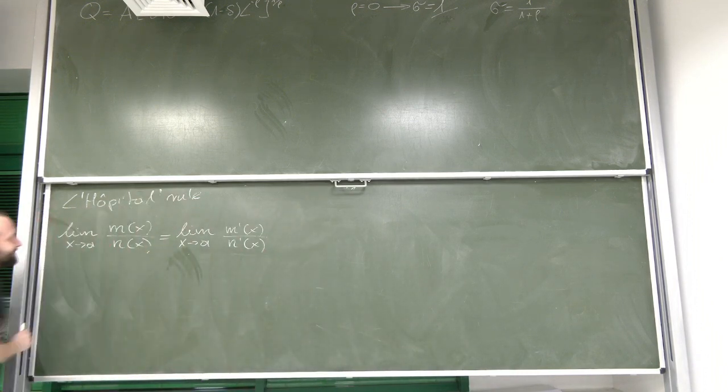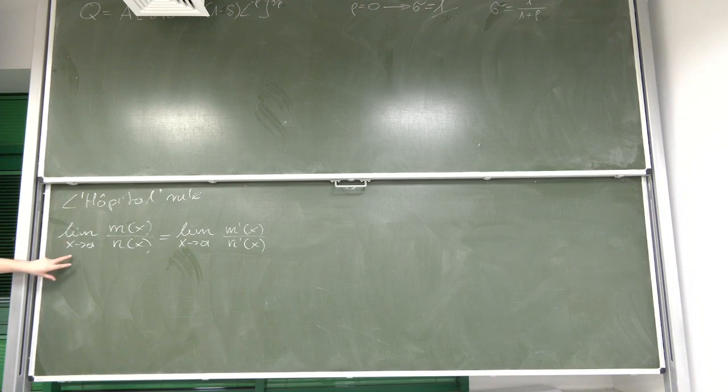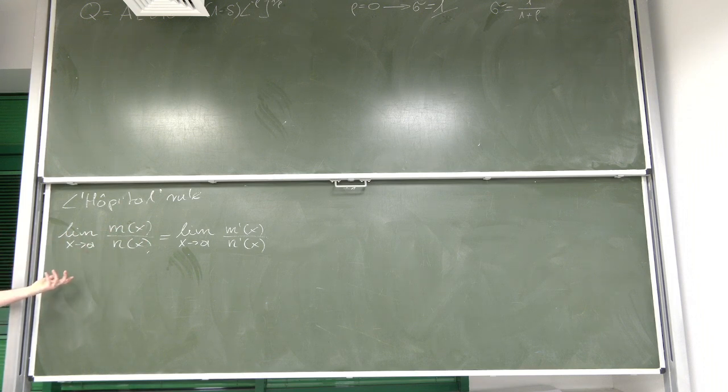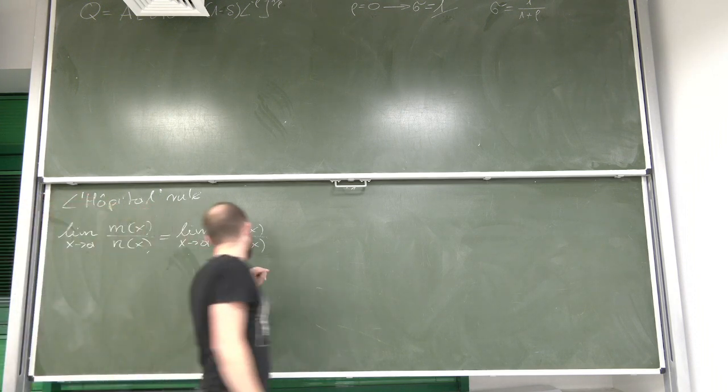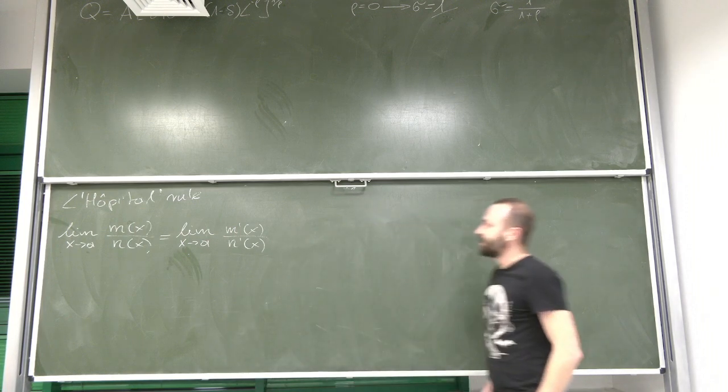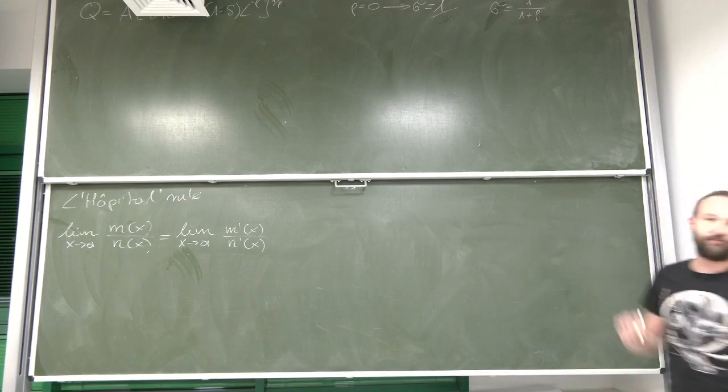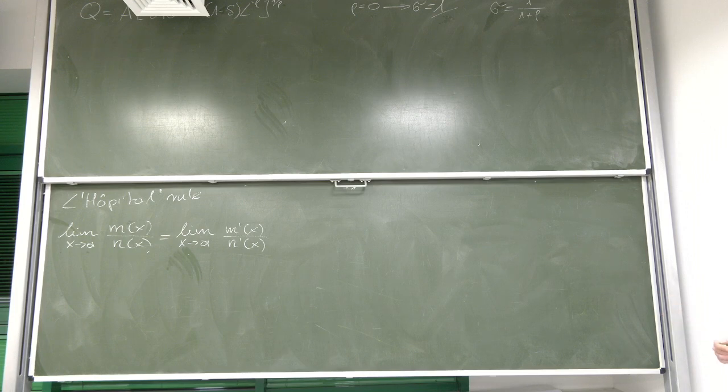L'Hôpital's rule is very simple. It simply says that if we have to calculate a limit of a ratio of two functions with x approaching to some number a, it can be a finite number, or it can be infinity or negative infinity, that doesn't matter. It turns out that this limit is going to be also equal to the limit of the ratio of derivatives of these two functions.